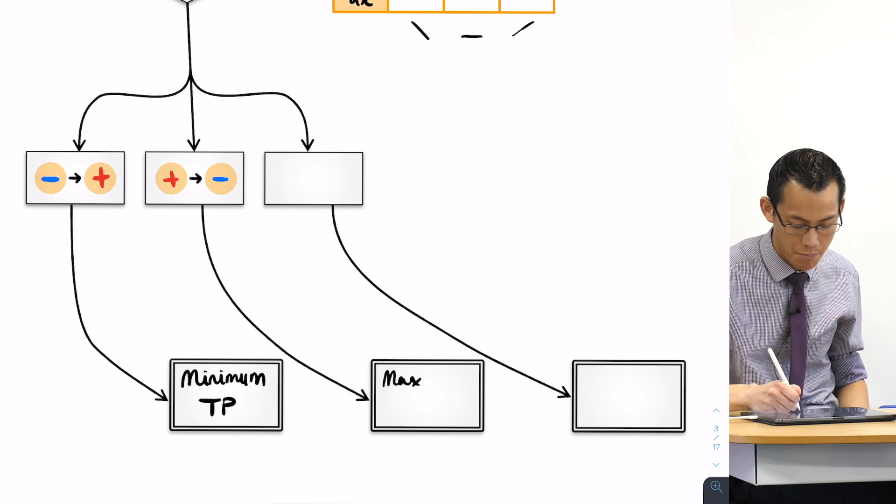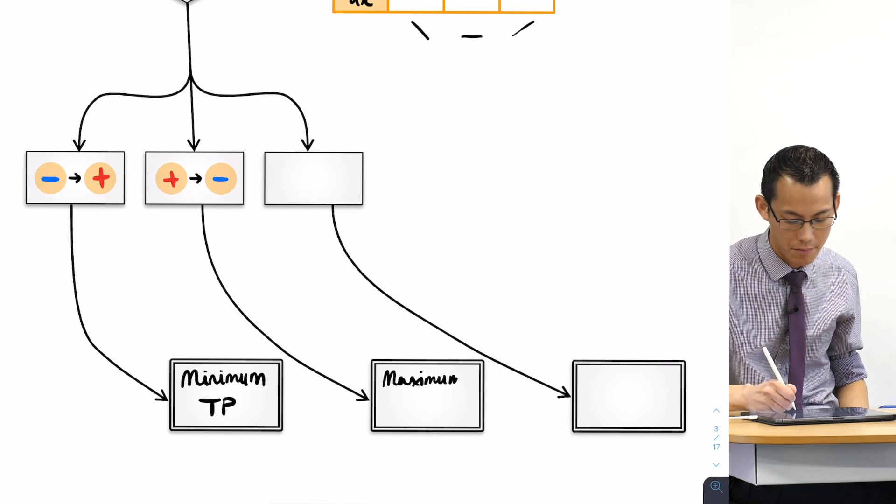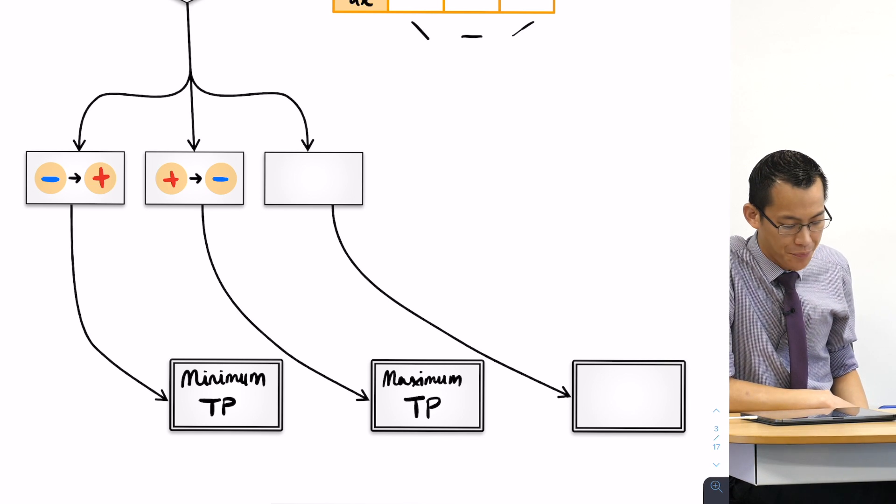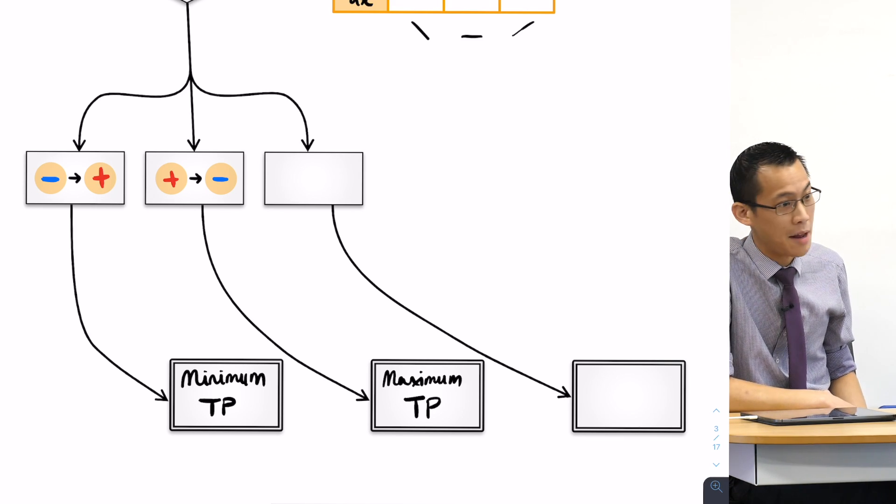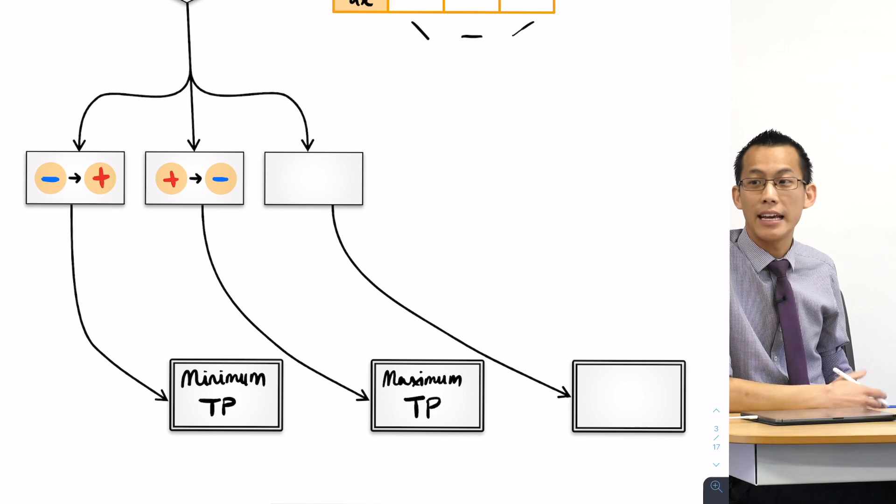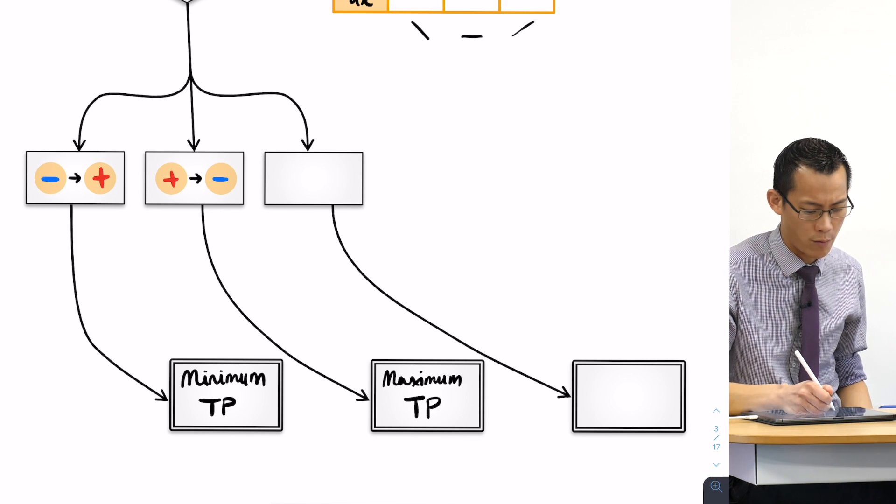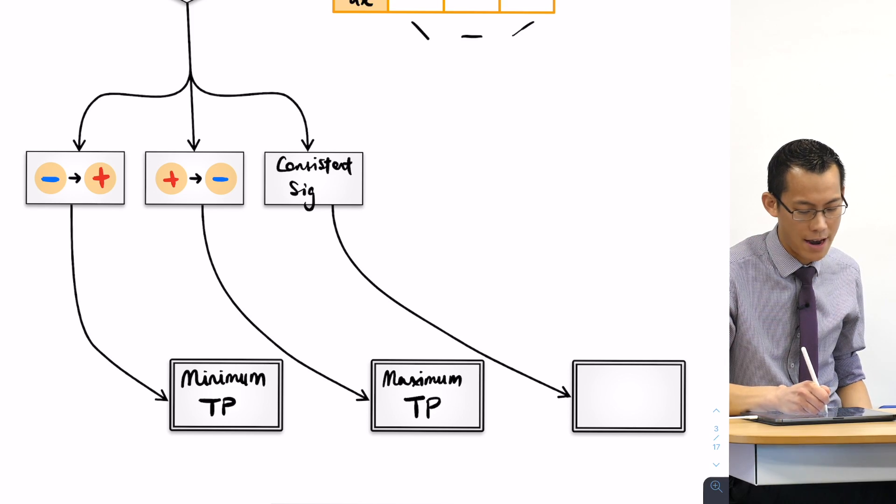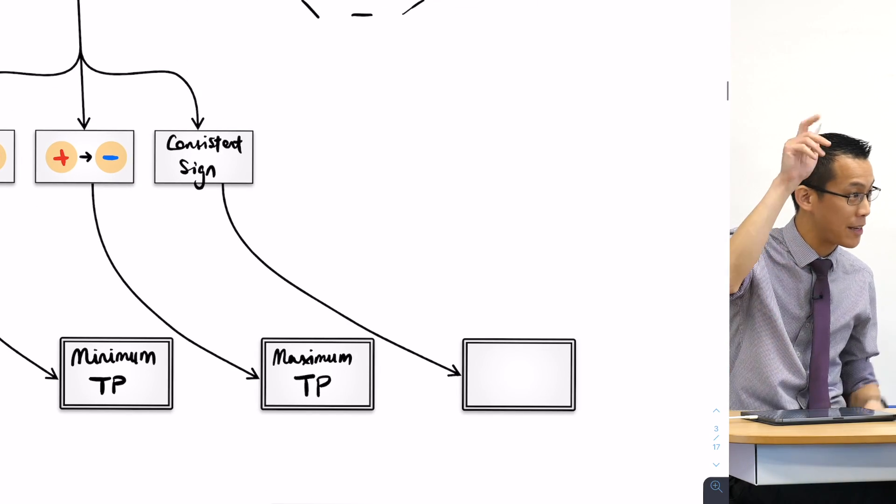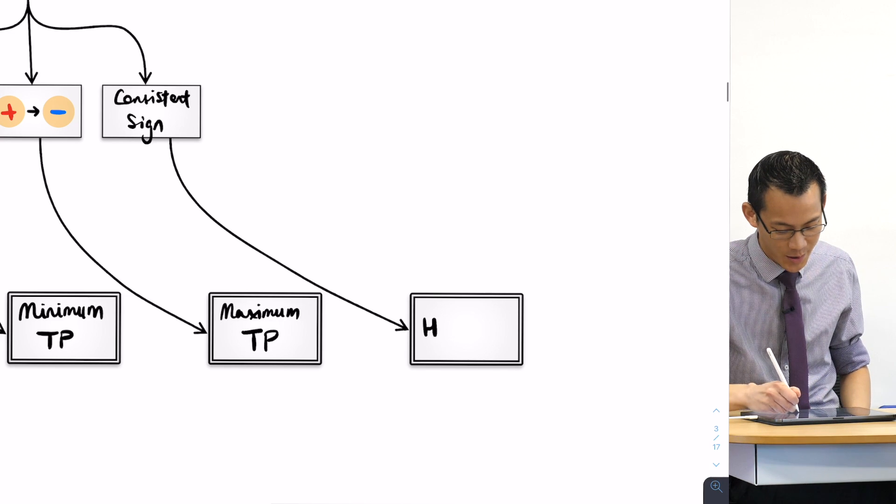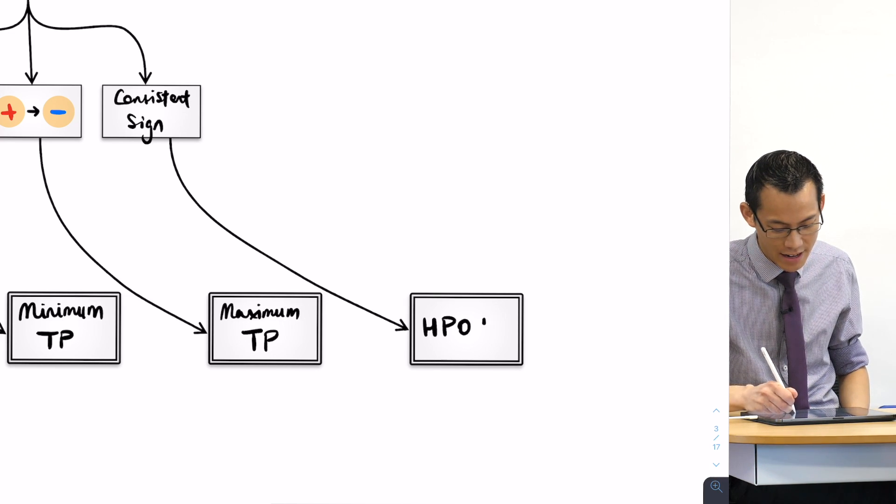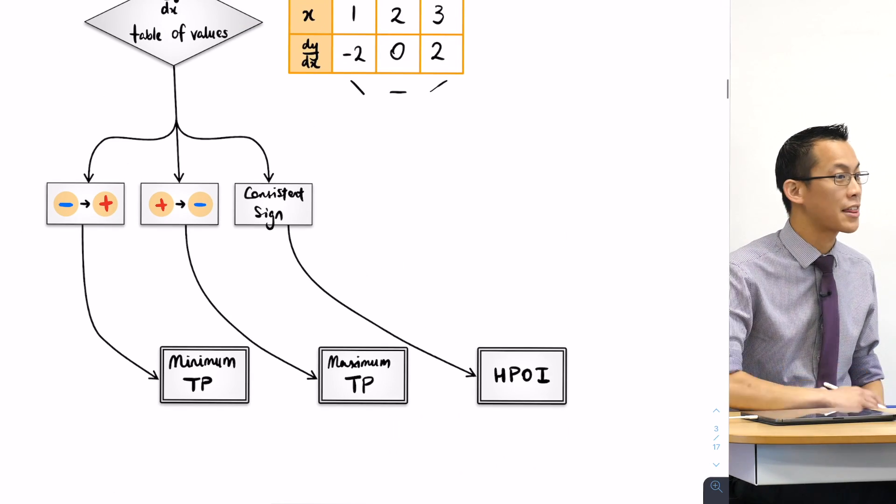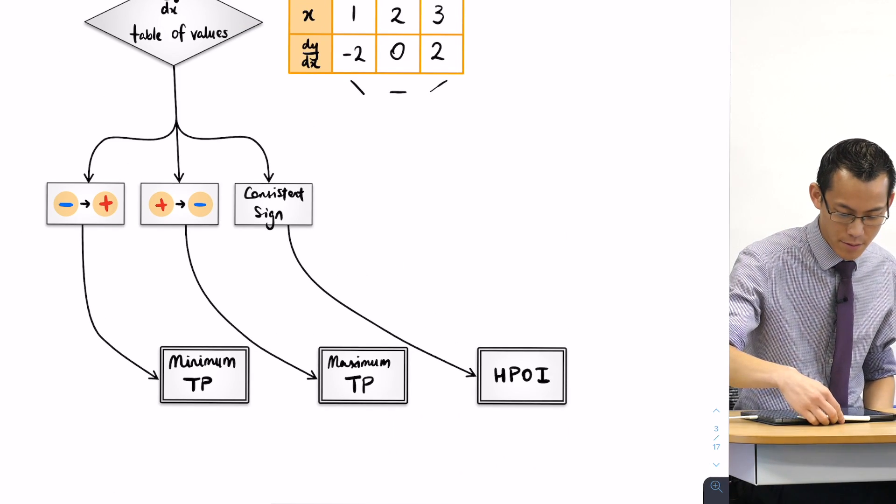Okay, now there's one last possibility, right? It might not change sign. It might not change sign. It might go positive positive, or it might go negative negative. Okay, what do we call that, by the way, when there's a consistent sign from on the left and the right? What do we call that? I gave it a name in that big Venn diagram. A horizontal point of inflection. That's a bit of a mouthful, isn't it? Okay, so these are our three alternatives. Okay, it's a minimum or it's a maximum or it's a horizontal point of inflection.